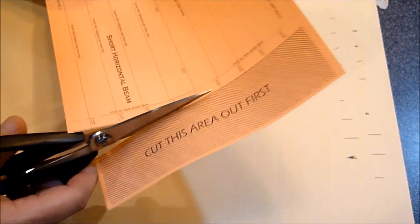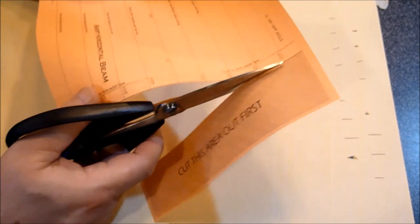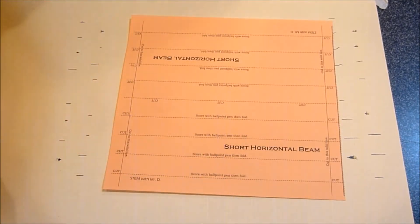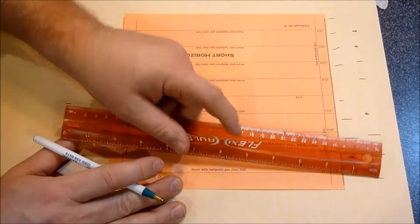So I'm going to start by cutting out this area first, and all it does is create a shorter beam. Then we go through the same procedure we go through with all of our beams.